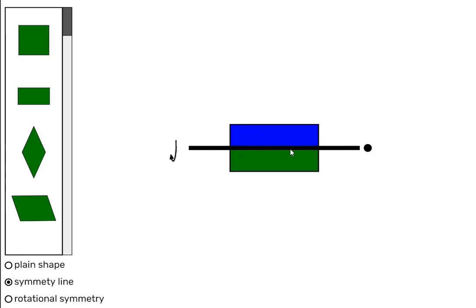And this is another symmetry line. So we have two symmetry lines. One vertical and one horizontal.